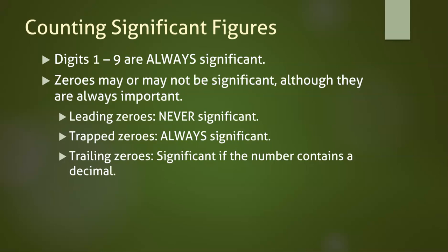Trailing zeros come after the last non-zero digit. They might represent measured or estimated values, or they might be placeholders. To determine which case is appropriate, we look for a decimal. The location of the decimal doesn't matter, but if the number has a decimal written down, we assume that the trailing zeros are significant. If a number is written without a decimal, we assume that all of our trailing zeros are placeholders, and thus not significant.